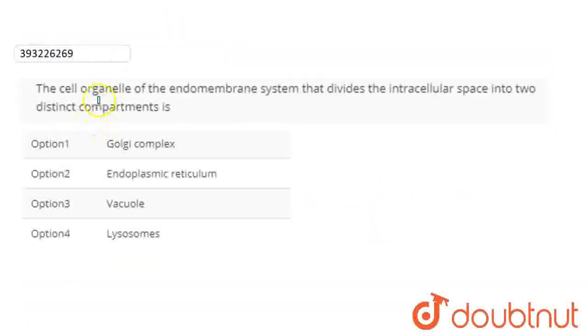Hello students, let's start the question. Question here is: The cell organelle of the endomembrane system that divides the intracellular space into two distinct compartments.